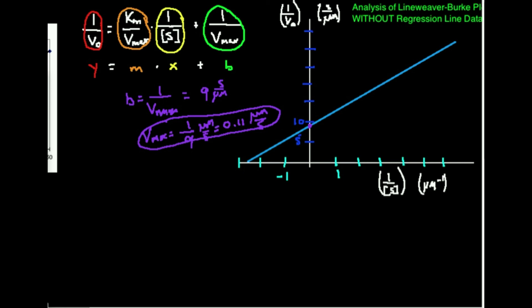There's more than one way to figure out the Km. Option one: the slope of the line is Km over Vmax, and we just found Vmax — but we don't have a y = mx + b equation, so we don't explicitly know the slope. You could do the point-slope formula, but that's a lot of work. Instead, I'd rather use the x-intercept, which equals negative one over Km.